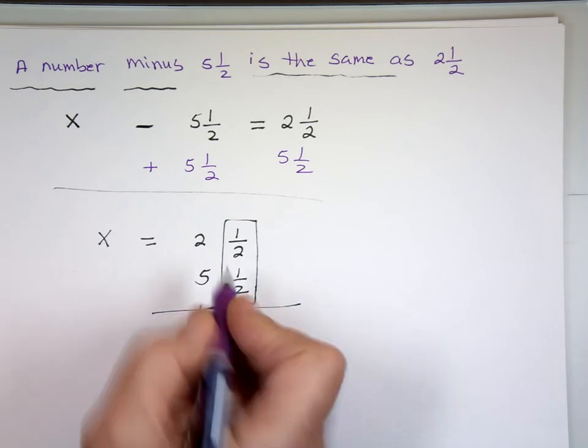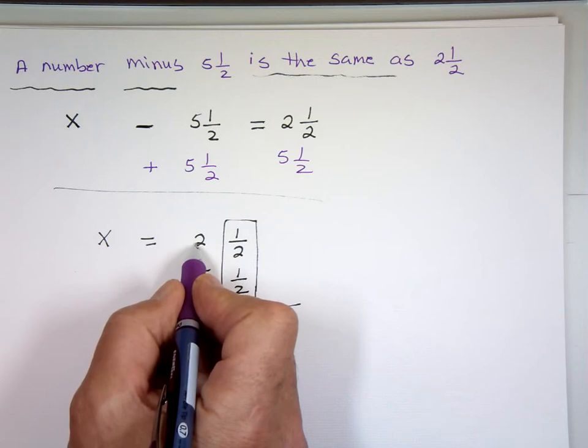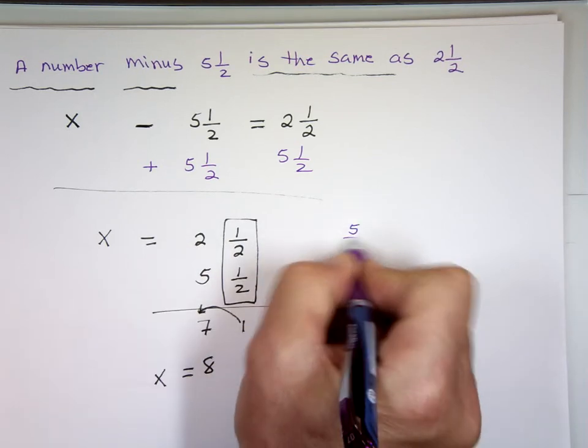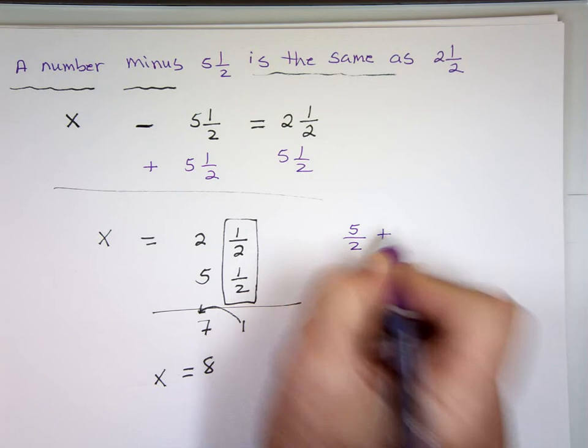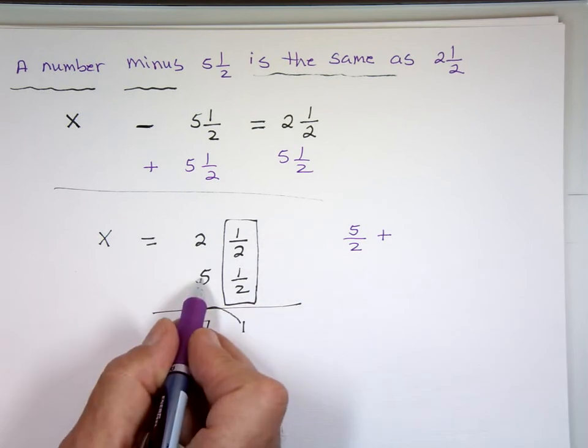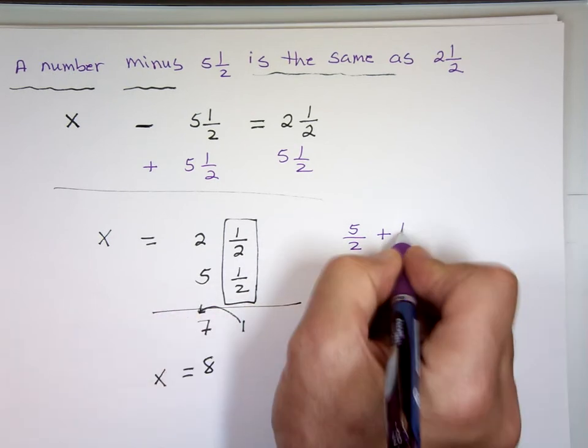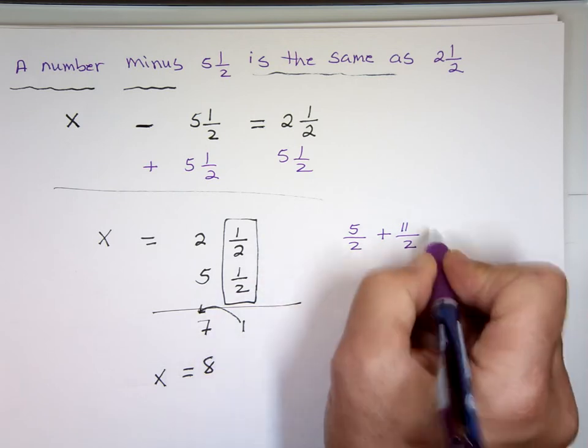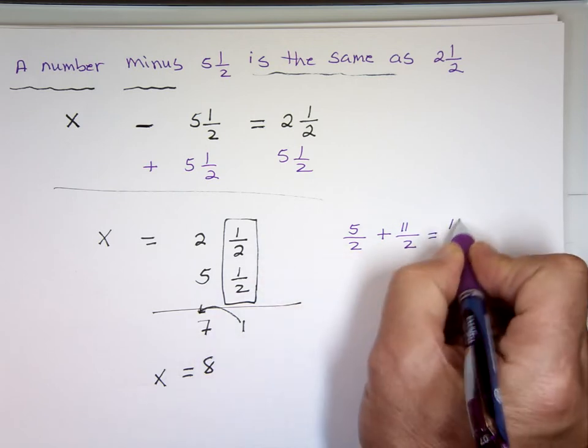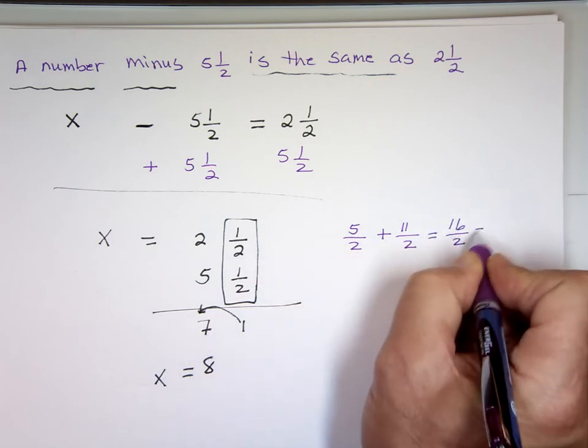If you want to change it to improper fraction, then go ahead. I'll do it the other way. Two times two. Four and one. Five over two. Two times five. Ten and one. Eleven over two. Since the bottom is the same, that's what? Sixteen over two. What's sixteen over two? Eight.